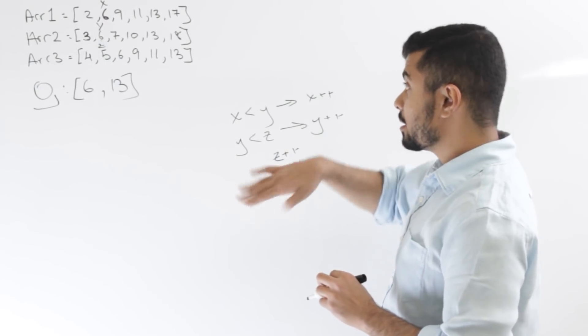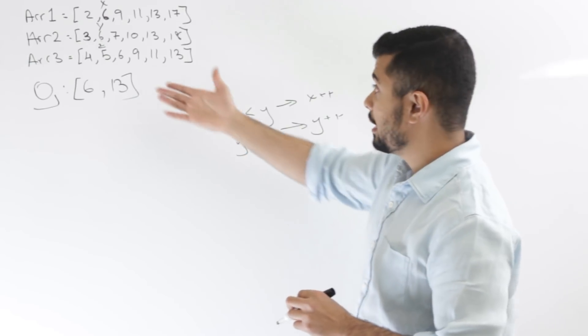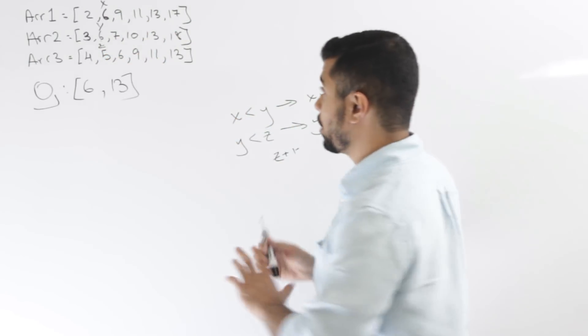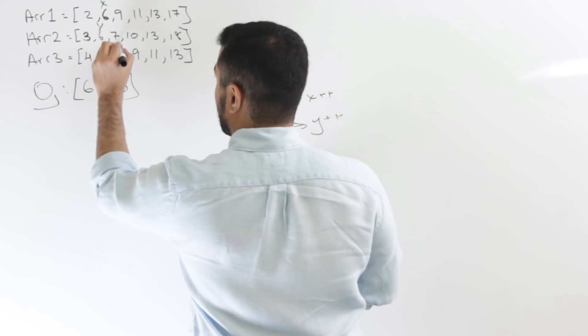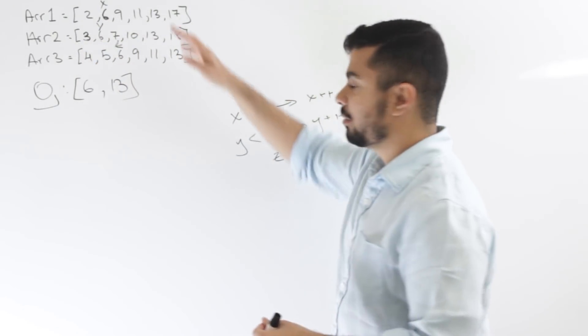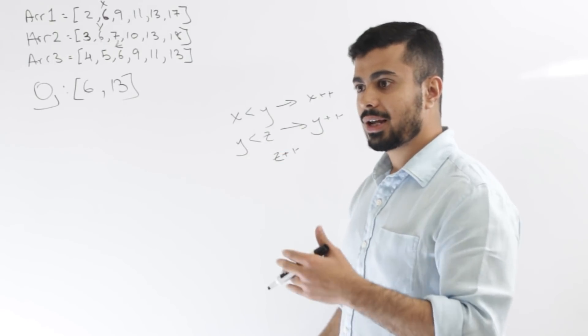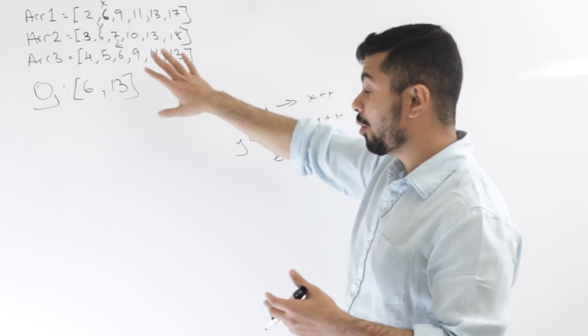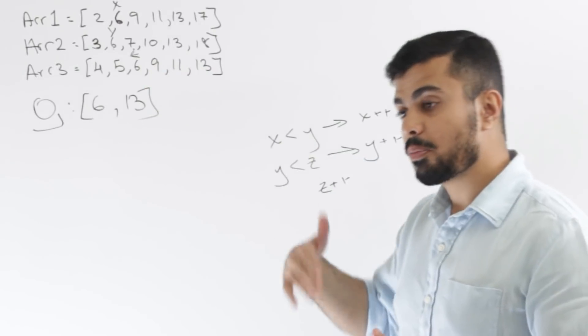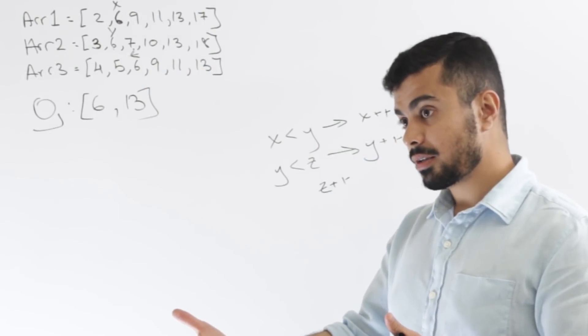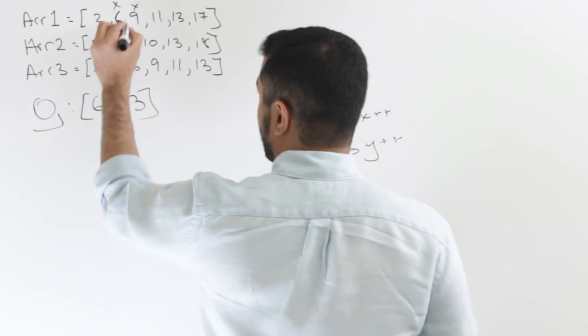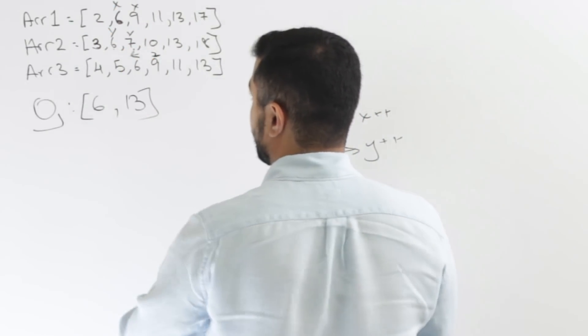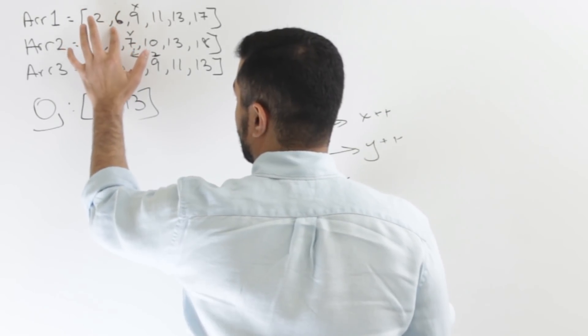Right now, it's the same thing, same scenario. Z is less than X and Y, so I increment Z again. Obviously, we're checking if all three are equal in every loop. Now all three are equal, so we'll push that into the results array and we'll increment all three of the indices. So the X will be over here, Y will be over here, and Z will be over here. And we'll start the process all over again.